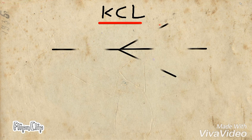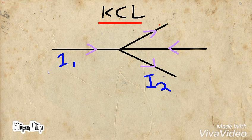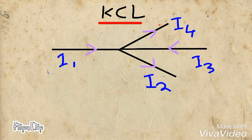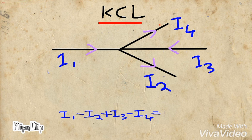In this example, we are showing four branches intersecting at a node point, with currents I1, I2, I3, and I4 shown in the diagram. The algebraic sum means that incoming current is taken as positive and outgoing current is taken as negative. So we can write the KCL equation at this node as: I1 minus I2 plus I3 minus I4 equals zero. Here, I1 is positive because it is incoming, and I2 is negative because it is outgoing.